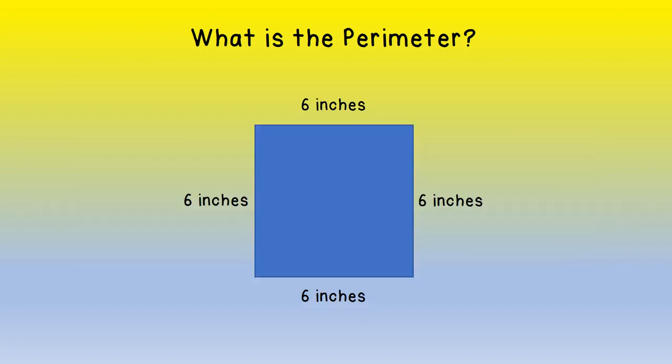Here we have a square and we know that a square, all four sides are the same length. Those sides are congruent and so each side is 6 inches. Use those measurements to find the perimeter.